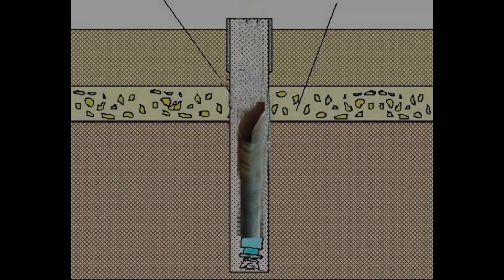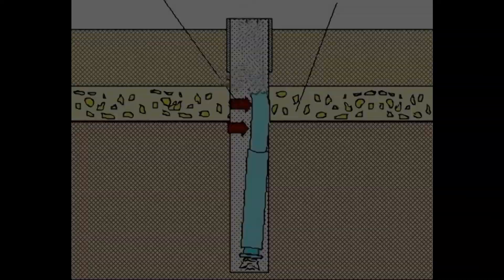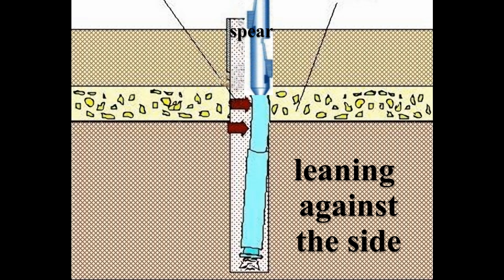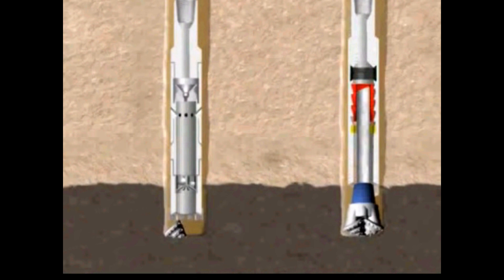A fish can be pulled out with either an overshot that fits over or swallows the fish if it is standing up clear of the side of the hole, or a spear which hooks or fits down into the fish if it is not. Overshots are preferred to spears because spears can be difficult to remove if the fish is still stuck. Both overshots and spears have multiple grapples that can grip the fish securely and once gripped then uses jars or hammer-like blows in hopes of freeing the fish.